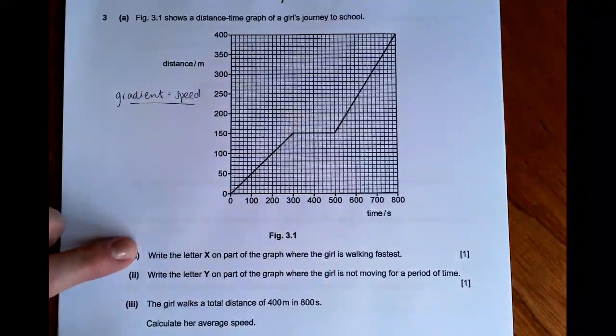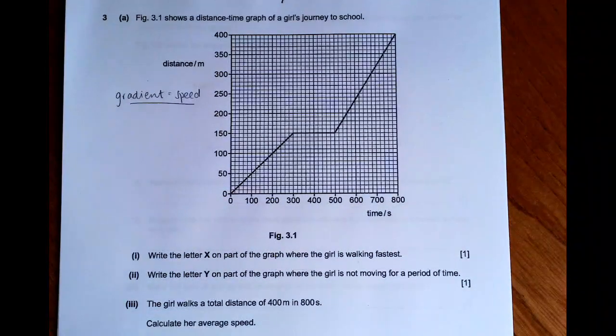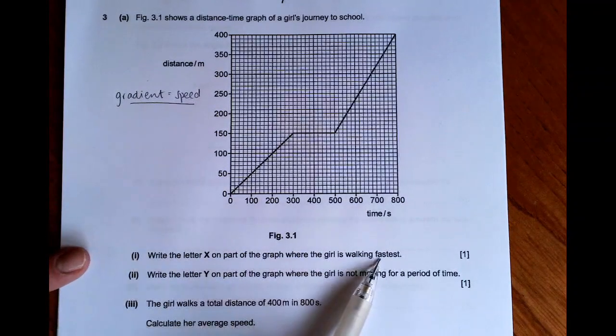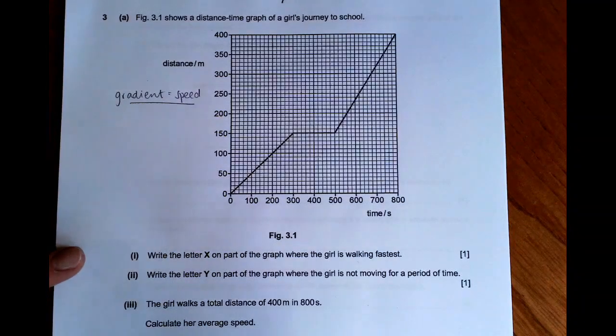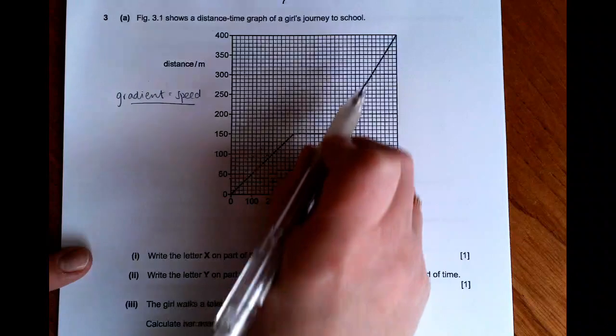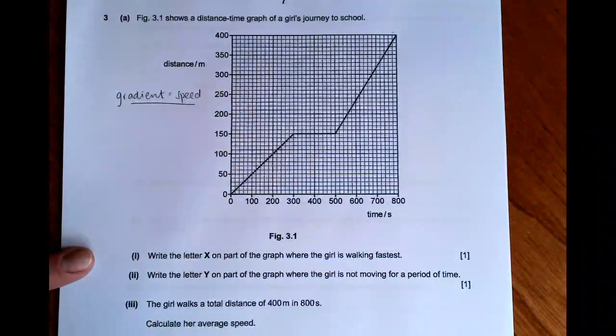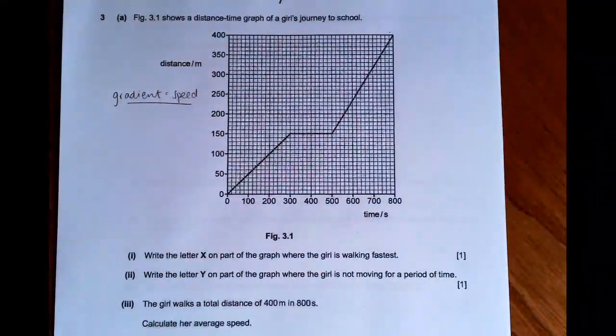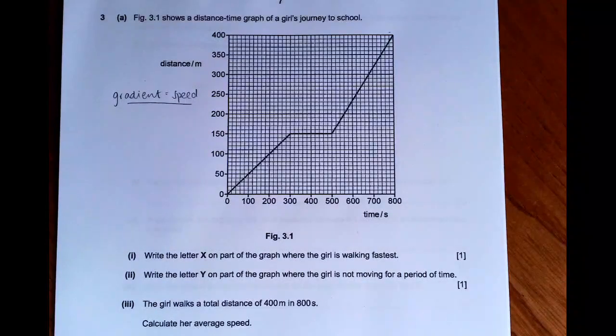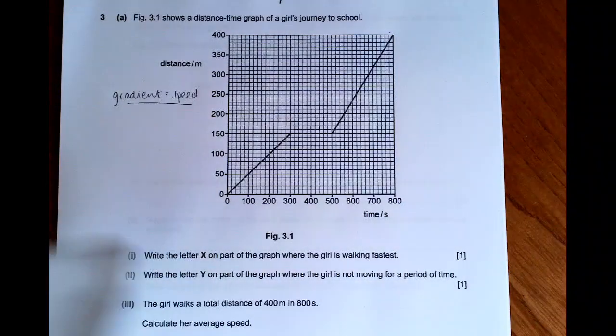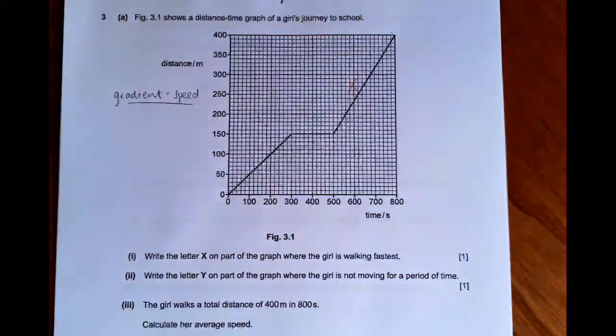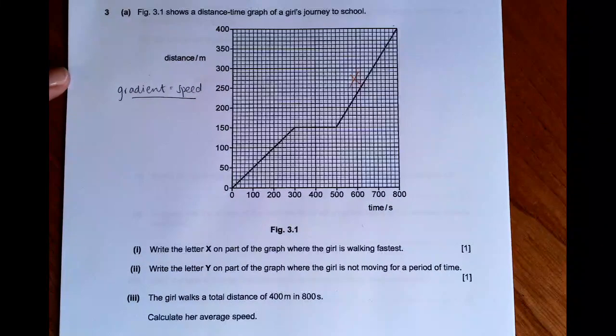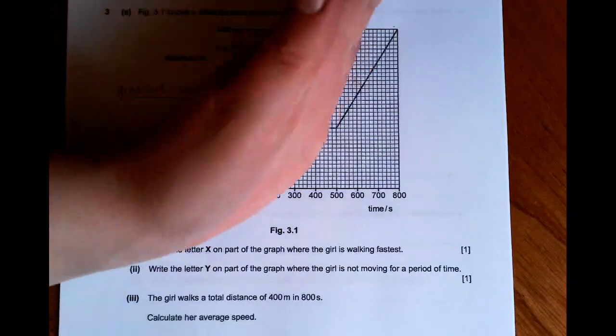And we know that the gradient is equal to the speed at any given point. That's going to help us. So it says, write the letter X on the part of the graph where the girl is walking fastest. So highest speed will be highest gradient, steepest gradient. So if you put the letter X anywhere from here up to here, that would be fine. So I am going to just pop it in the middle. So X is here, the steepest part of the graph. You can see that that's steeper there.